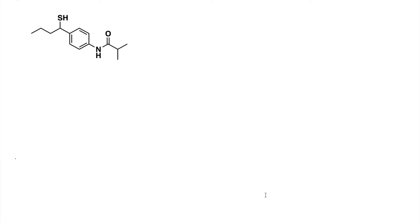As with any retrosynthesis plan, we might want to have a quick scan of our molecule to see what functional groups we have and what we're dealing with. I'm going to label a few of them here. Over on this side of the molecule I've got a secondary amide. In the middle of the molecule I've got a 1,4-benzene. And I've also got this thiol functional group here. So there are three key functional groups in this molecule.